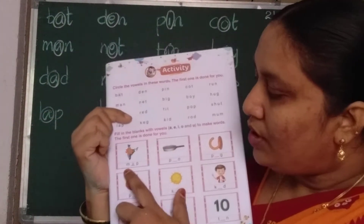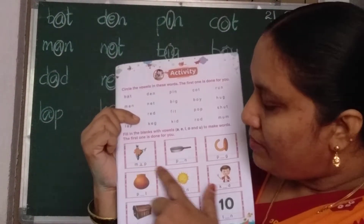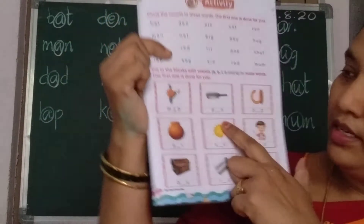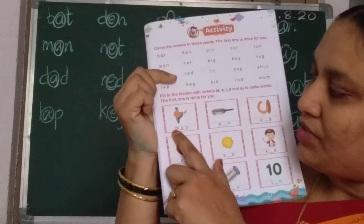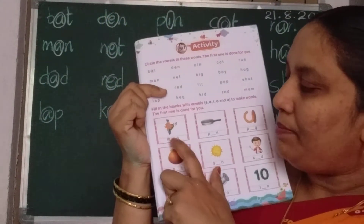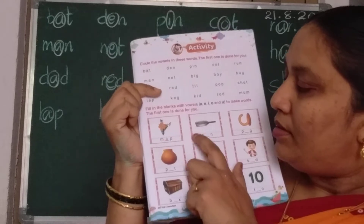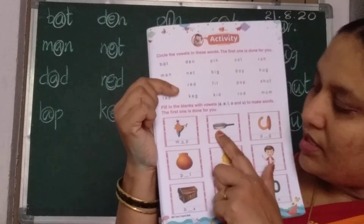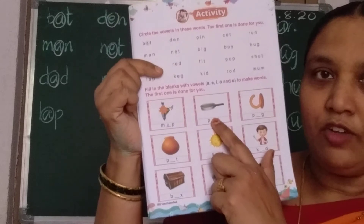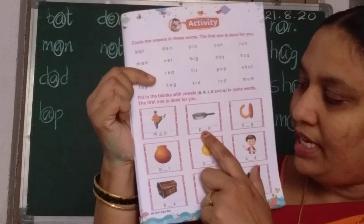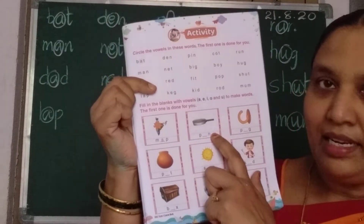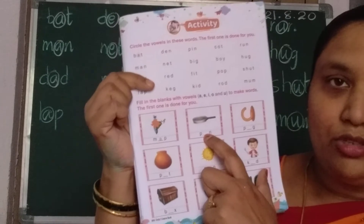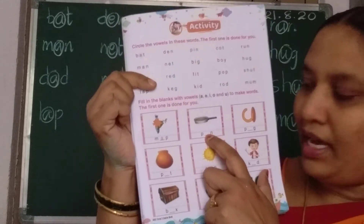Now, the second bit — you should write the missing letters with the vowels. The first one is done for you already: M, A, P — map. Next one, what is the picture of? This is the picture of a pan. The spelling of pan is P, A, N. P and N are already there, so you should write A here. Pan.